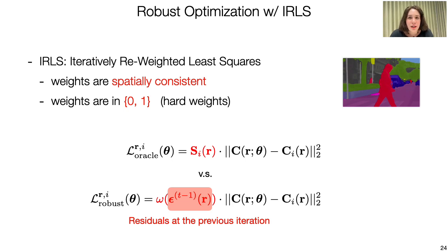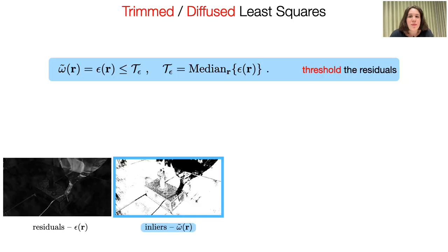In order to design the kernel weights, we first filter the residuals in the current mini batch based on the median of the residuals in the previous iteration.